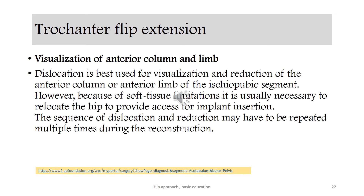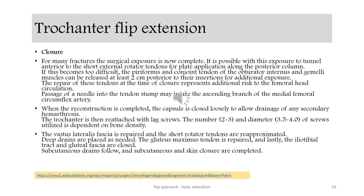Visualization of the anterior column and limb. The dislocation is best used for visualization and reduction of the anterior column or anterior limb of the ischiopubic segment. However, because of soft tissue limitations, it is usually necessary to relocate the hip to provide access for implant insertion. The sequence of dislocation and reduction may have to be repeated multiple times during the reconstruction. For many fractures the surgical exposure is now complete. It is possible with this exposure to tunnel anterior to the short external rotator tendons for plate application along the posterior column. If this becomes difficult, the conjoined tendon of the obturator internus and gemelli muscles can be released.